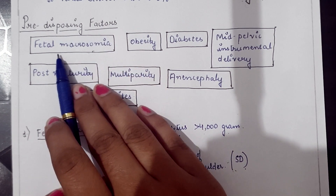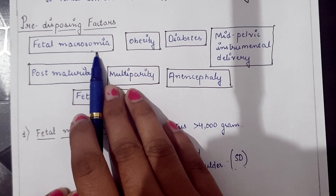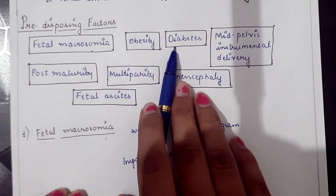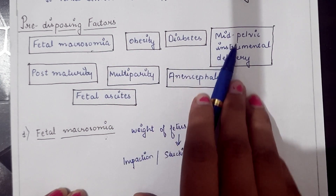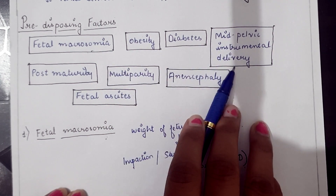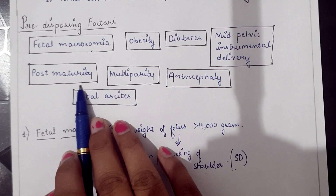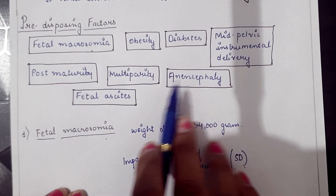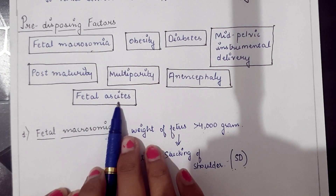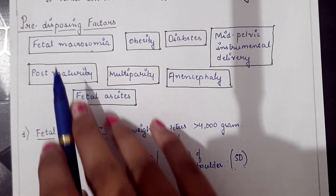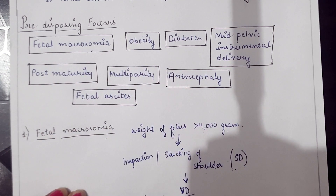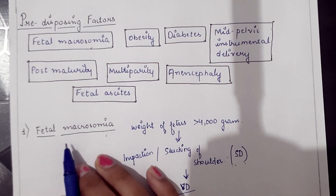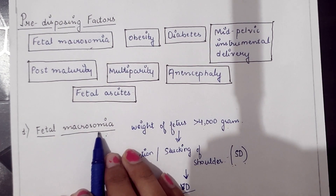The predisposing factors of shoulder dystocia include: fetal macrosomia, obesity, diabetes, mid-pelvic instrumental delivery, post-maturity, multiparity, anencephaly, and fetal ascites. I will discuss all these factors one by one in detail.